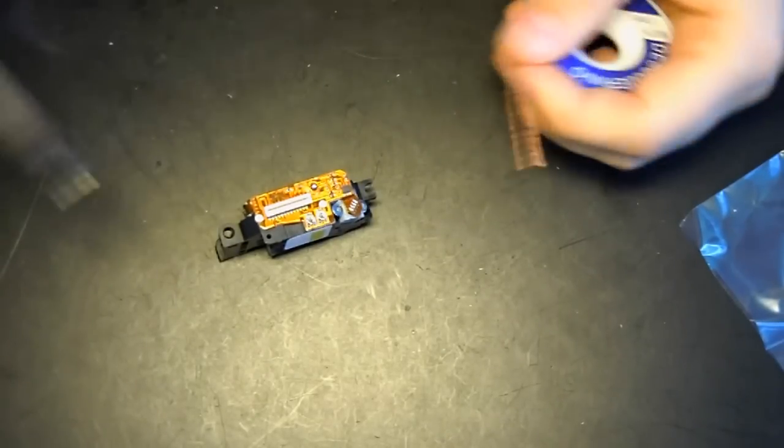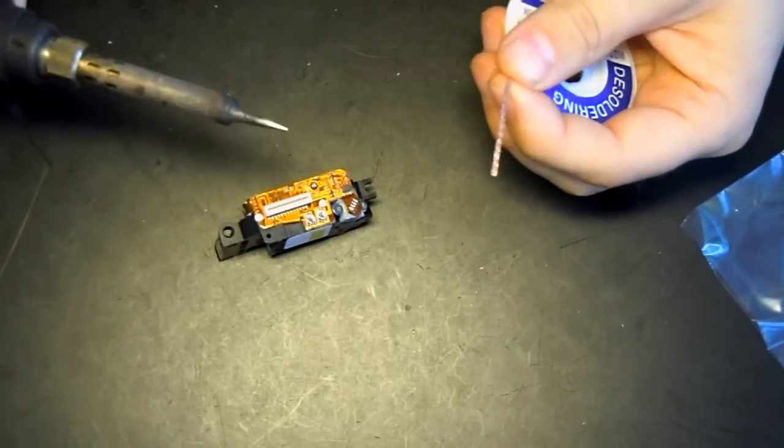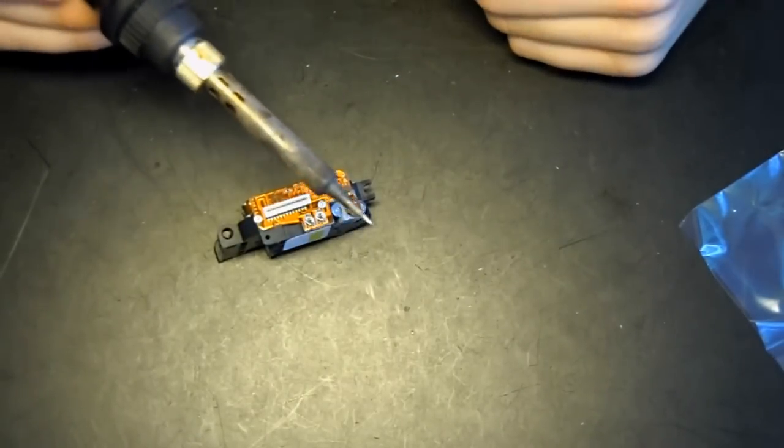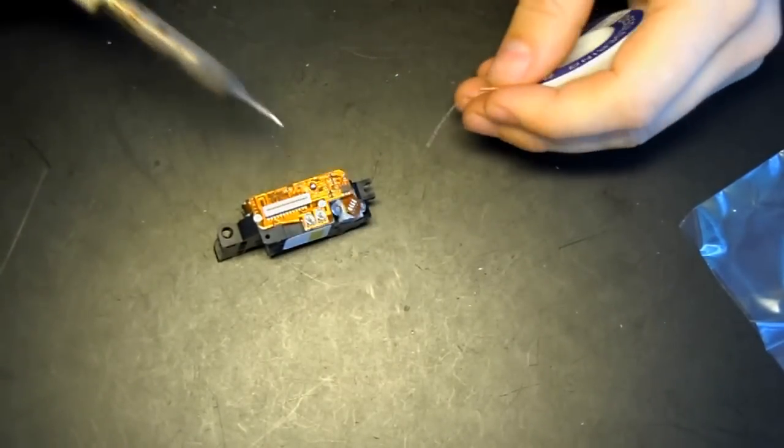The easiest way to do this is just with a soldering iron and with a soldering braid. I've set my soldering iron up to 350 degrees.